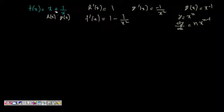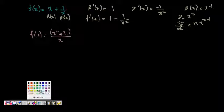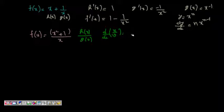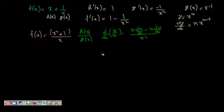We can also simplify f(x) as (x² + 1)/x, which is in the form h(x)/g(x) — the division rule form. We can apply the quotient rule, remembering it as: d/dx of u/v equals (v·du/dx minus u·dv/dx) divided by v². It's easy to remember in this u/v form.